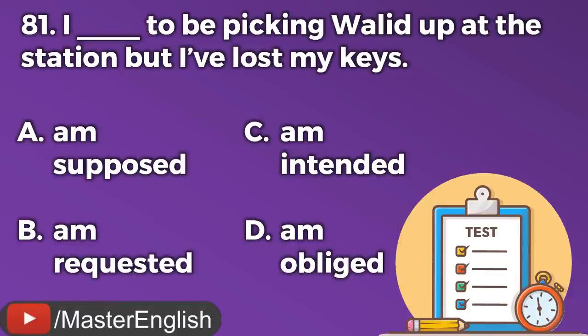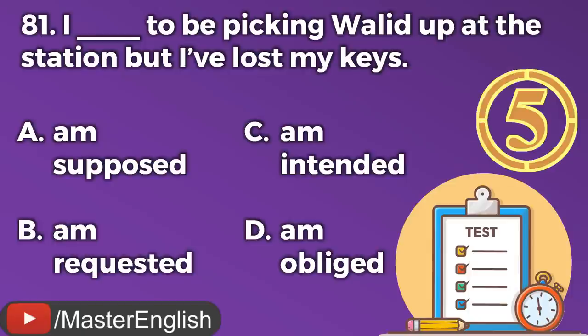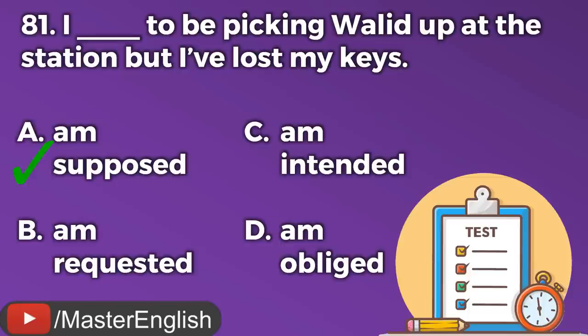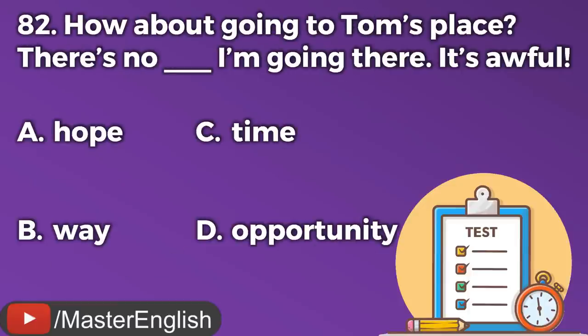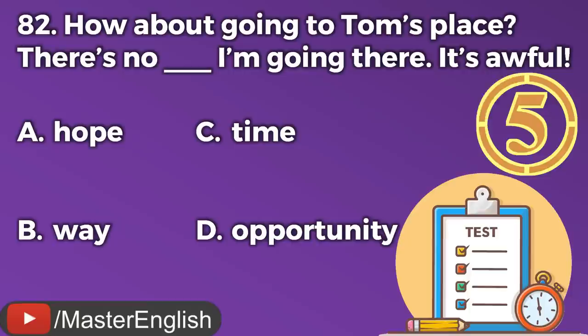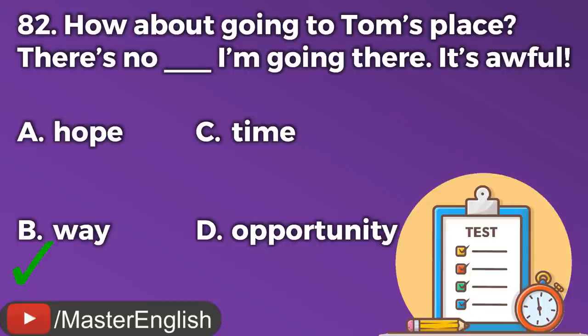Question number eighty-one. I ___ to be picking Walid up at the station, but I've lost my keys. A: Am supposed. B: Am requested. C: Am intended. D: Am obliged. The correct answer is A: Am supposed. I am supposed to be picking Walid at the station. Question number eighty-two. How about going to Tom's place? There's no ___ I'm going there — it's awful. A: Hope. B: Way. C: Time. D: Opportunity. The correct answer is B: Way. There's no way I'm going there.